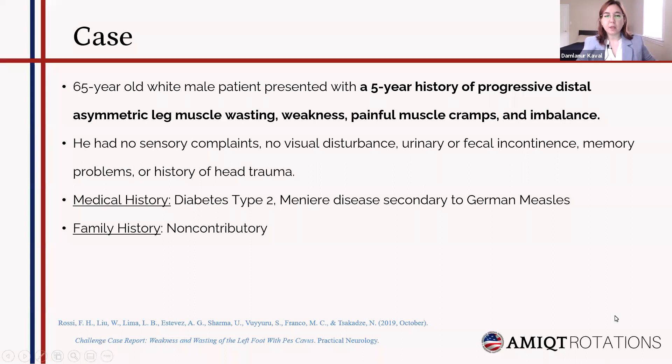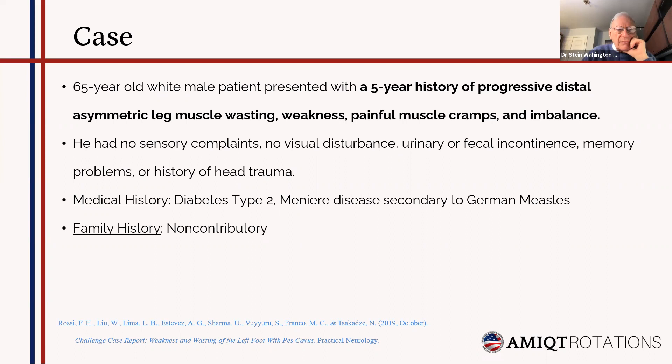Our case is a 65-year-old white male patient presented with a five-year history of progressive distal asymmetric leg muscle wasting, weakness, painful muscle cramps, and imbalance. He had no sensory complaints, no visual disturbance, urinary or fecal incontinence, memory problems, or history of head trauma.